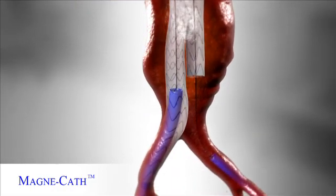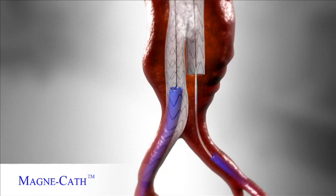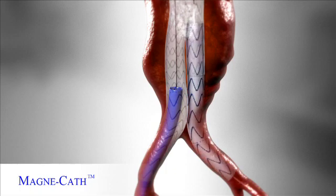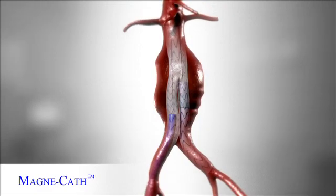The contralateral stent graft limb is now deployed. The procedure has been successfully completed using the MagnaCath magnetic snare.